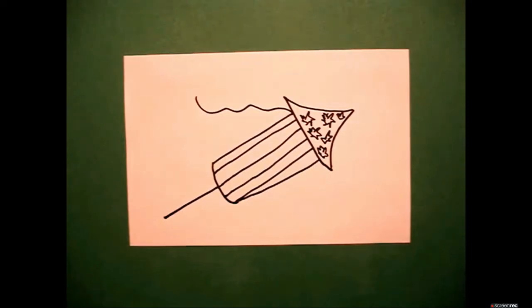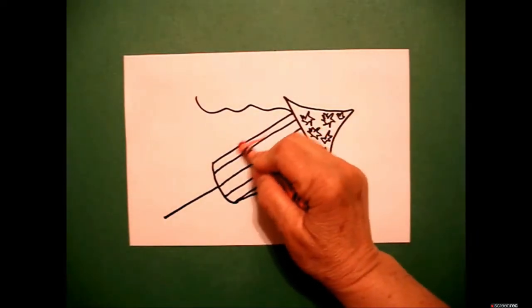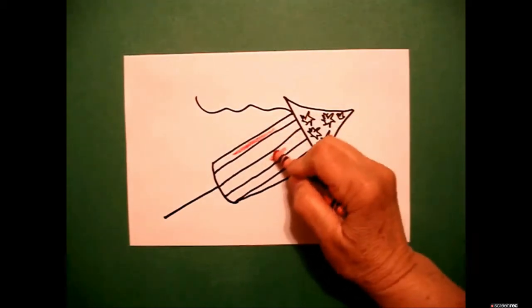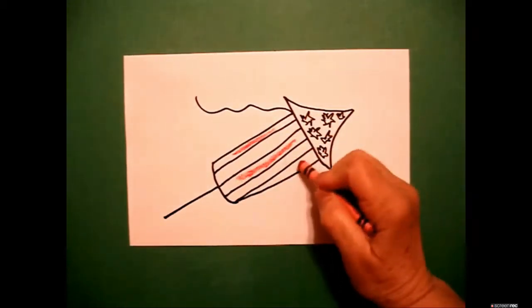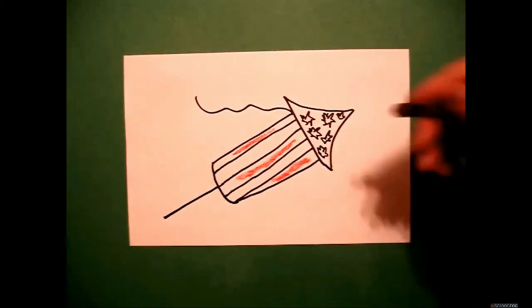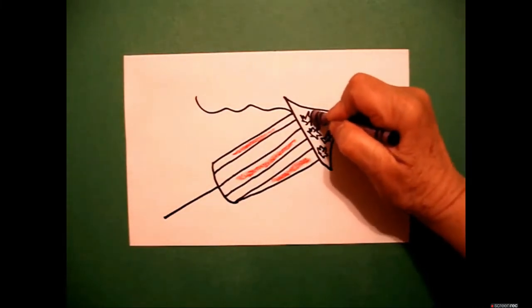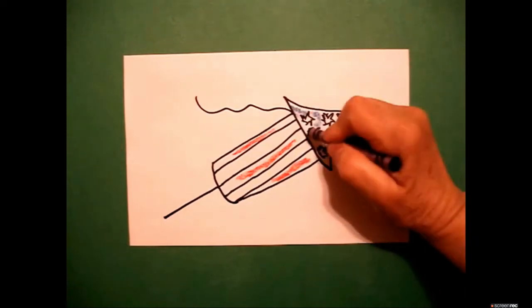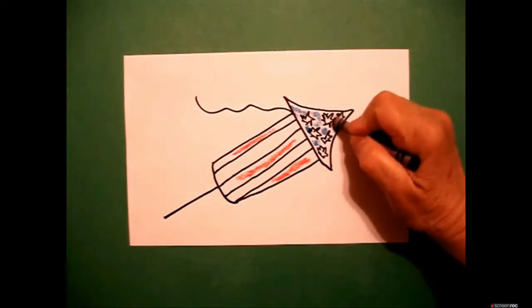Okay, now we're ready to color. This is super easy to color because all we're going to do is make red and white stripes on this section and carefully use blue to color around all my white stars. Take your time.